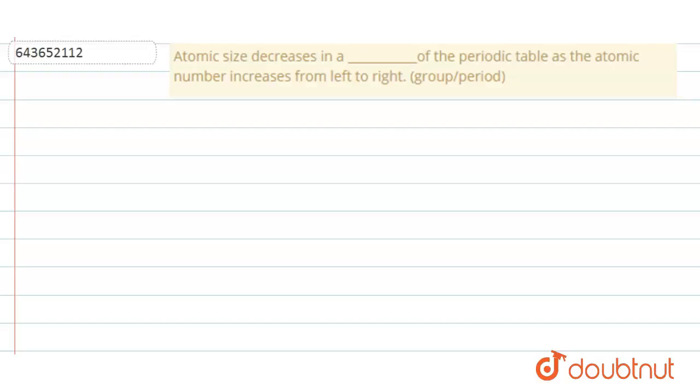Let us see in a periodic table we have two types of patterns. One is a horizontal row. The horizontal row is called period and we have a vertical column called group.